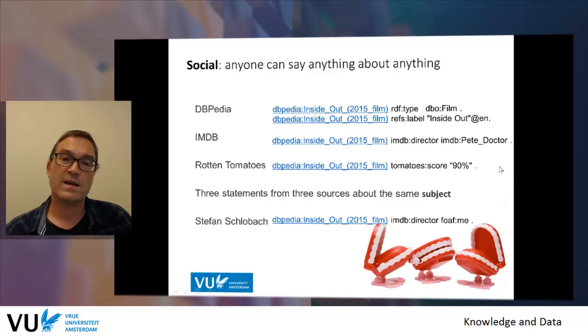So the power of the web is that we can all publish things and this is the same power on the web of data. We can publish data but now the question is what of the data is more trustworthy, which one is more is true and so forth.